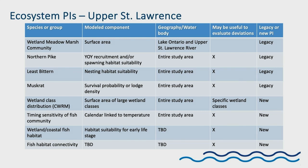Here are the PIs for the upper St. Lawrence. There are eight indicators currently. The table shows the species or group, the modeled component, the geography, whether it's useful for evaluating deviations to a particular plan, and whether it's a legacy PI from Plan 2014 or a new PI. For the upper St. Lawrence, we have four legacy PIs and four new performance indicators. I'll discuss the wetland meadow marsh community, the northern pike, the muskrat, the timing sensitivity of fish, and the coastal wetland response model.